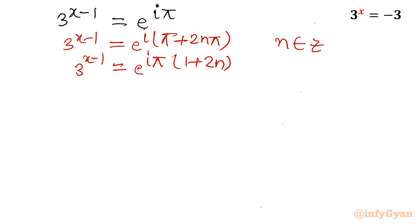Now we have to find out the value of x - that would be our solution. How I can write? I will write 3 as change of base: e raised to the power ln 3. So 3 power x minus 1, I will write e power ln 3 whole power x minus 1.